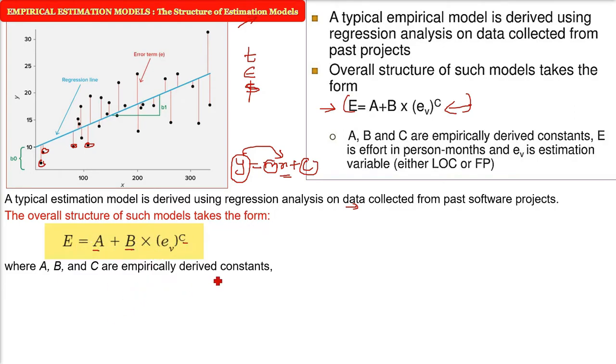Here we have A, B, C are empirically derived with respect to past experiences. What is E? E is the effort in person-months, meaning how many people you have to take, what effort you have to put to complete the project. E is always in person-months.